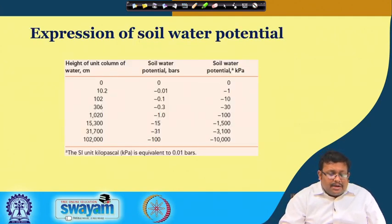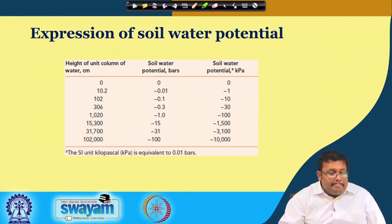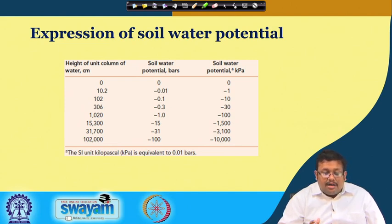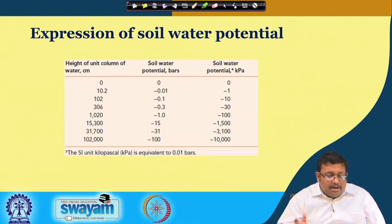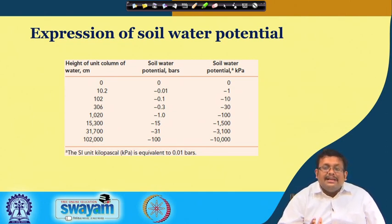Soil water potential can be expressed as height of unit volume of water in centimeters, in bars, or in kilo Pascal. The SI unit kilo Pascal is equivalent to 0.01 bar, which is basically a conversion from one form to another.